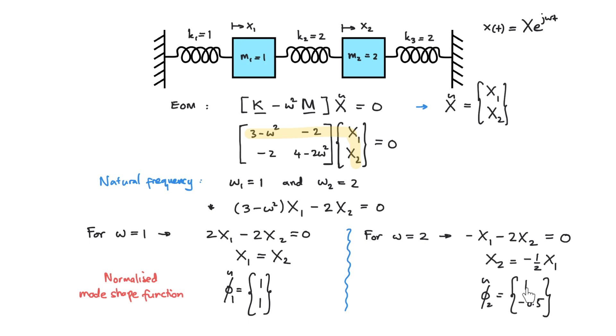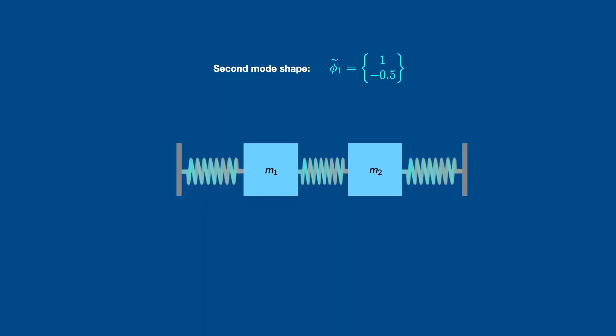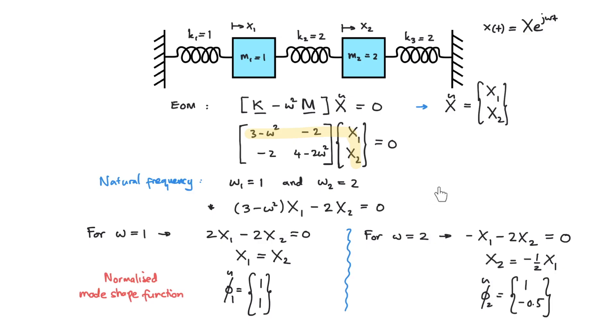This physically means that at the second natural frequency, if m1 moves by 1 unit, mass m2 will move by half of it, but at the opposite direction because it is negative. So the motions will be like this.